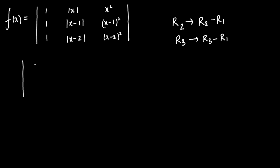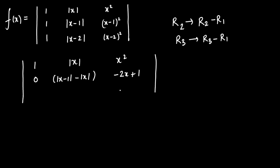I am going to write the determinant. The first row will be as it is: 1, mod of x, x squared. The second row starts with 0. The next element will be mod of x minus 1 minus mod of x. Subtracting x minus 1 squared from x squared, x squared cancels, giving 2x minus 1. The third row similarly gives 0, mod of x minus 2 minus mod of x, and minus 4x plus 4.